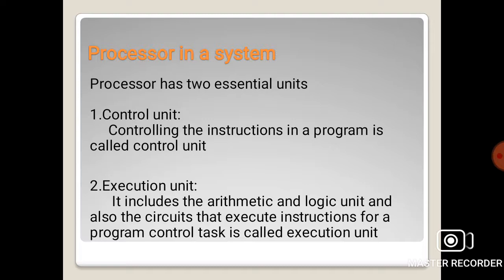Processor in a system has two essential units: control unit and execution unit. Control unit controls the instructions in a program. Execution unit includes the arithmetic and logic unit and also the circuits that execute instructions for a program control task.